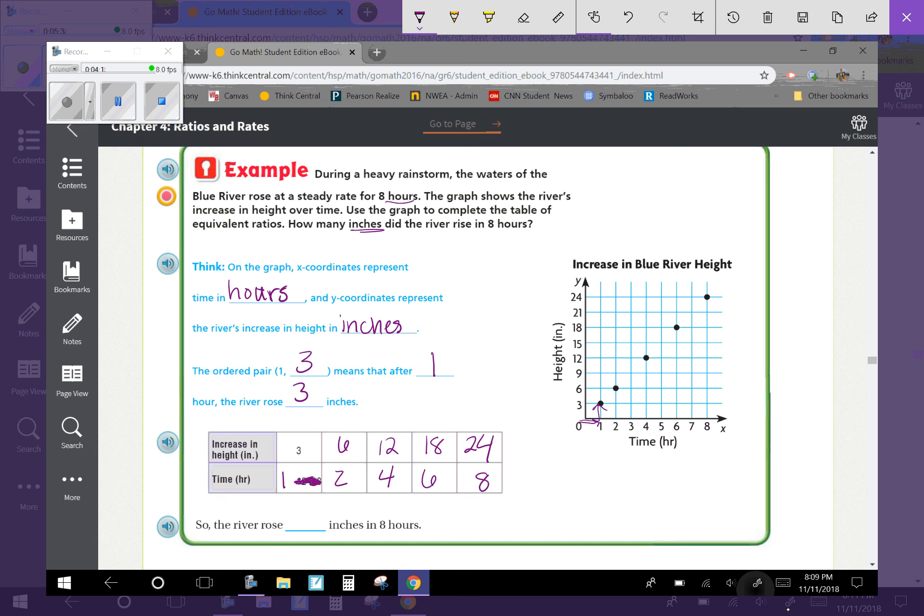So here we have 2, 6, 4, 12, 6, 18 on the graph, and 8, 24. I just put in the table the points that are up here on this graph. So that's why I kind of jumped numbers because there was no 3 on here, and there was no 5 or 7 listed. The question was, how many inches did the river rise in 8 hours? I look here at the time in hours, which is 8, and I see that it rose 24 inches.